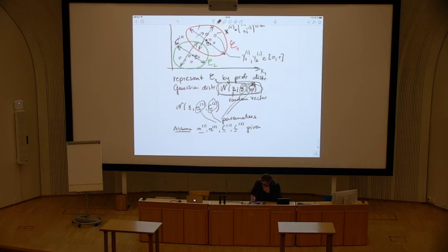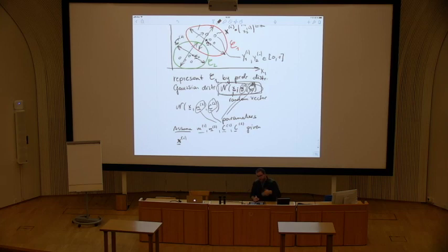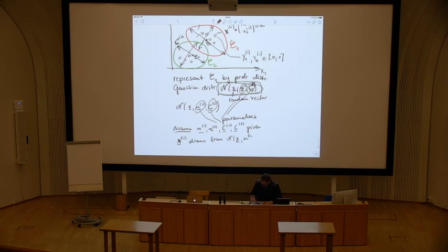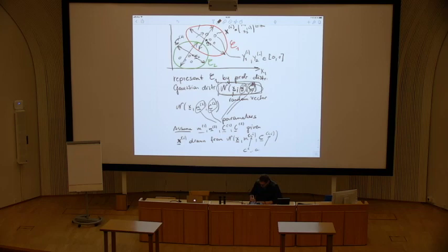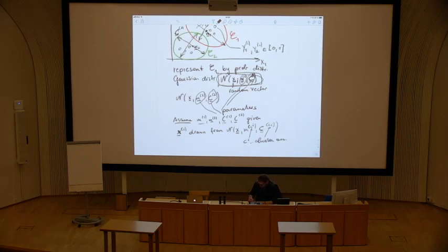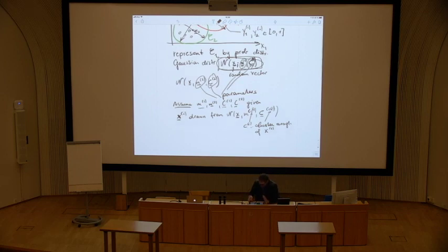We represent a cluster by a probability distribution. A particular data point xi — for example the first feature vector in your data set — is a draw from one of these Gaussian distributions, with some mean vector mi and covariance matrix Ci. Here Ci is the cluster indicator, or cluster assignment, of data point xi. This variable tells you from which cluster the i-th data point was drawn. So Ci is an element of the set {1, 2} — either cluster one or cluster two.